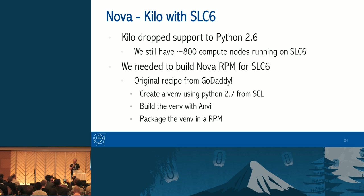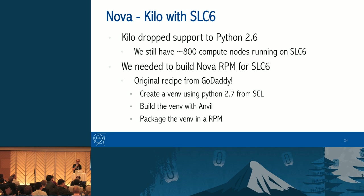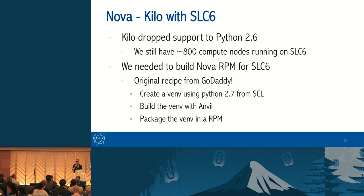Regarding the upgrade to Kilo: Kilo dropped support for Python 2.6, and we still have 800 compute nodes running SLC6. So we needed to build a new RPM to support this use case since Kilo doesn't consider this scenario. We are using an original recipe from GoDaddy — thank you guys for sharing. The idea is to create a virtual environment with Anvil using Python 2.7 from Software Collections. For now it's working great.